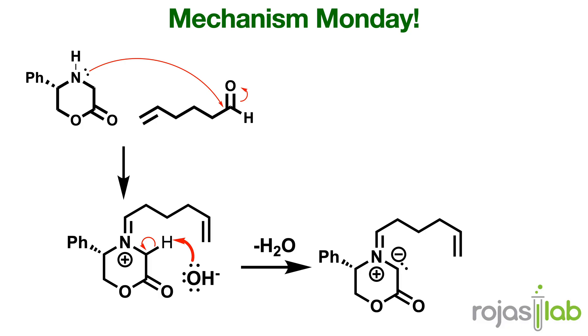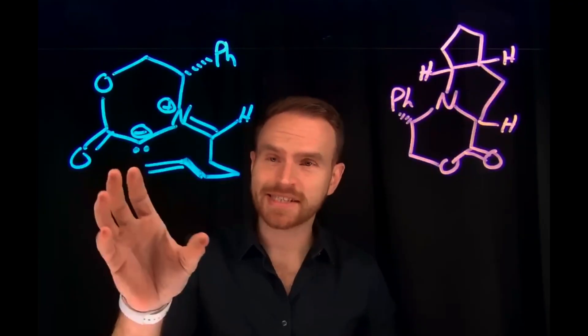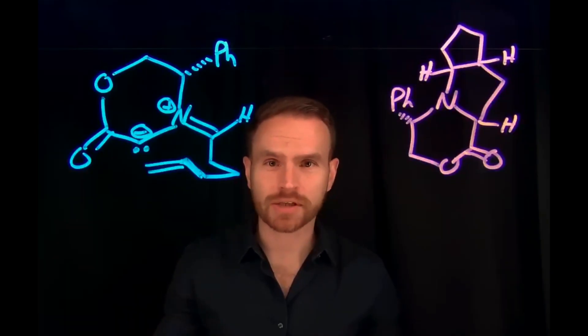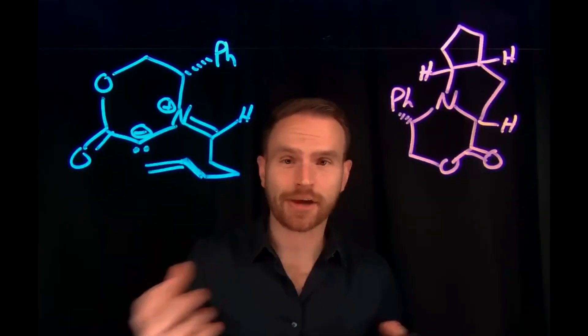This is most commonly seen with Wittig reagents, but we also see the formation of one here. And that actually gets us to this intermediate, which undergoes that 3+2 reaction that allows us to get our product.